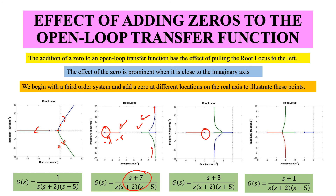Adding a zero at minus 3 makes the system fairly stable for all values of gain k. So the observation is: adding a zero to the open loop transfer function pulls the root locus to the left, and the effect of the zero is most prominent when it is close to the imaginary axis. In this plot we started with a third order system and studied several effects. That's all for today's lecture — thank you.